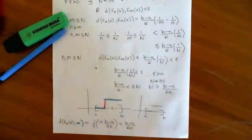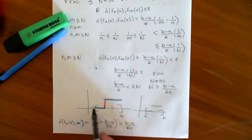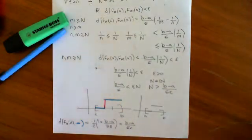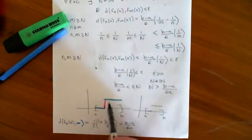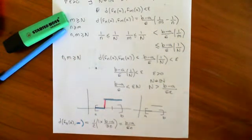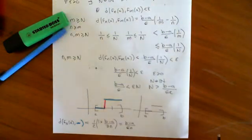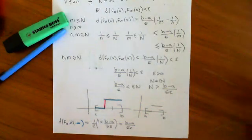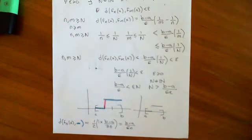That blue jump function is not a continuous function, so the sequence is converging to something outside the metric space C[a,b]. If we took the set of all functions on [a,b] and defined the integral metric, this step function would be in there, but it is not continuous, so it is not in C[a,b]. Therefore, we have found a Cauchy sequence which does not converge to anything within the metric space, and that is the reason this cannot possibly be a complete metric space.